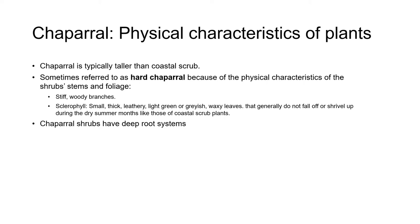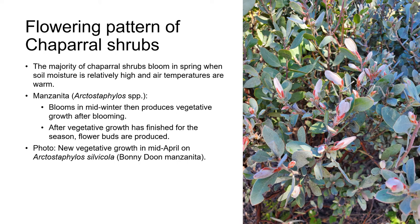Chaparral shrubs have deeper root systems than Coastal Scrub shrubs, enabling them to survive in rocky, nutrient-poor soils. The majority bloom and put on vegetative growth in spring when soil moisture is relatively high from winter rains and air temperatures are warm. The blooming season extends over around six months as a result of when some plants produce flower buds. Manzanitas are usually among the first to bloom, typically in mid-winter, then produce vegetative growth immediately after blooming while moisture is still available and before summer heat.